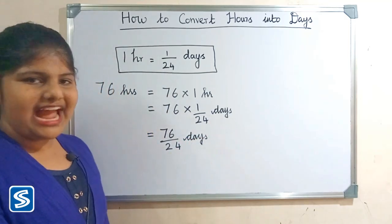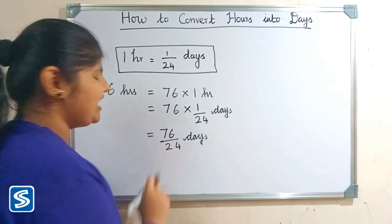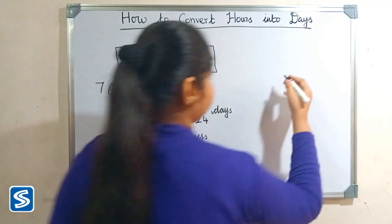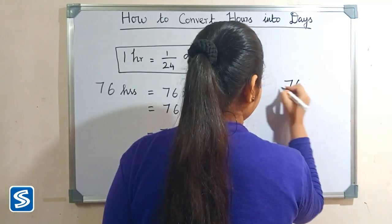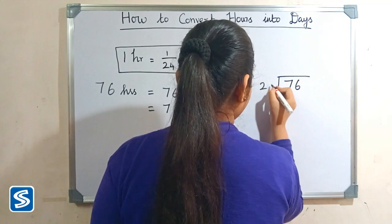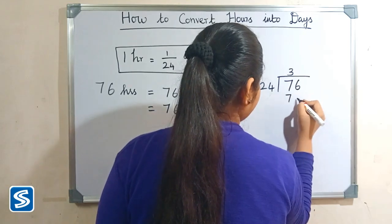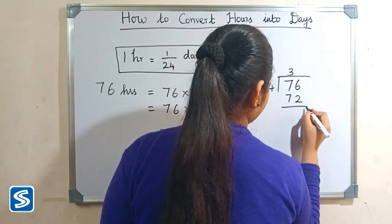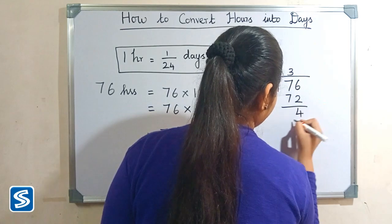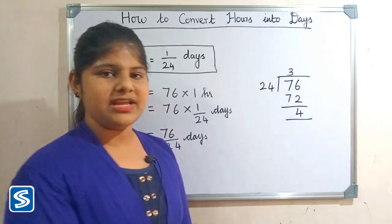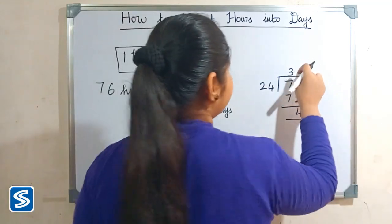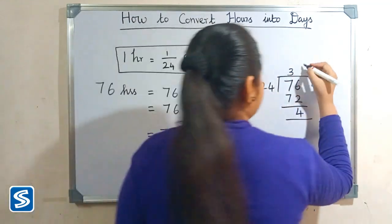So now we have to divide 76 by 24. So now we have to consider the quotient as days.